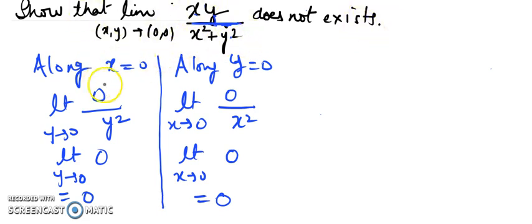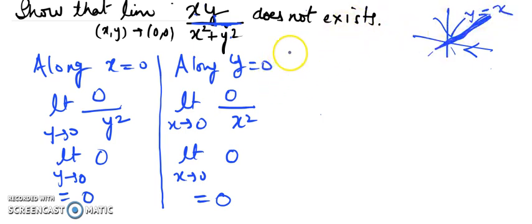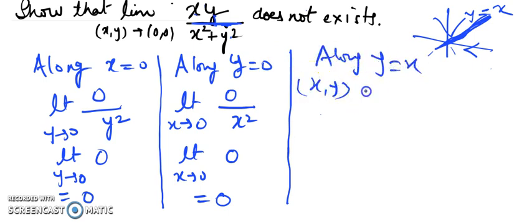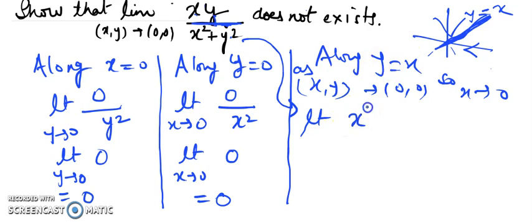Both axes give the answer 0, but I cannot declare that the limit exists because there are many other paths. I don't know whether they all give 0. So I have to select a different path. I'll try the straight line y = x passing through the origin. Along y = x, as (x, y) tends to (0, 0), x will also tend to 0. Substituting y = x into the expression: